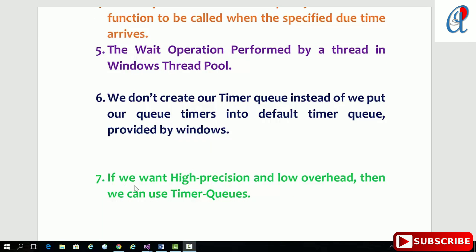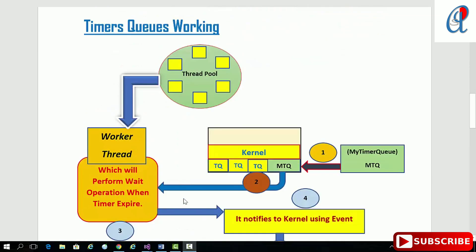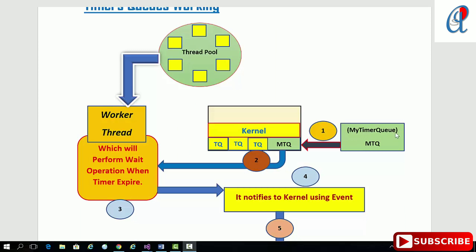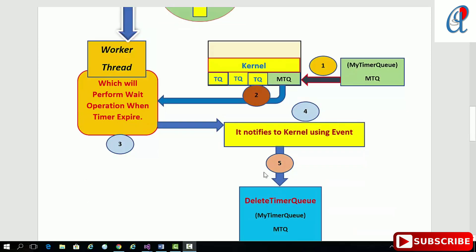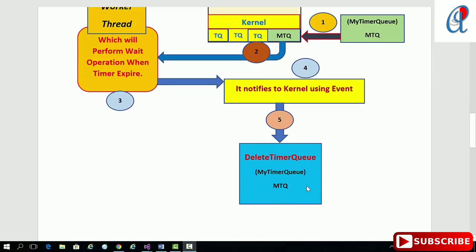The application of timer queue is: if we want high precision and low overhead, we can use this timer queue. Looking at the working: there is a timer queue residing in the kernel, we provide the time interval for the timer, a worker thread taken from the thread pool performs the wait operation, after execution the timer expires and notifies the kernel, then in the fifth step we delete our timer queue.